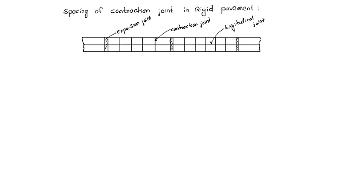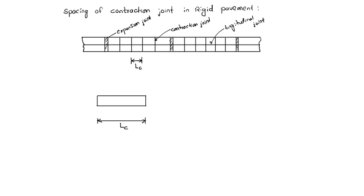This is the spacing of contraction joint, denoted Lc. Here, Lc is the spacing of the contraction joint. This is the thickness of the pavement, h. And the width of the slab is B.